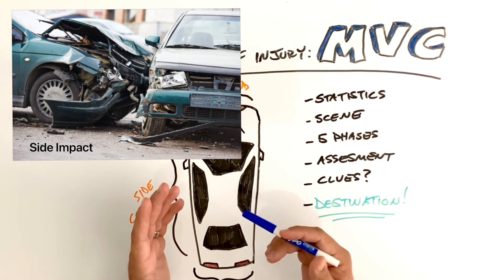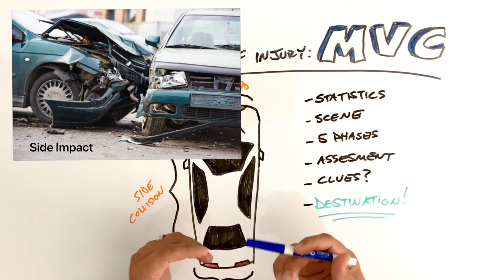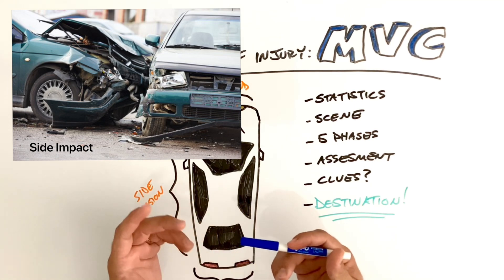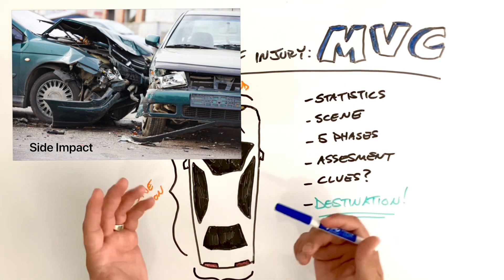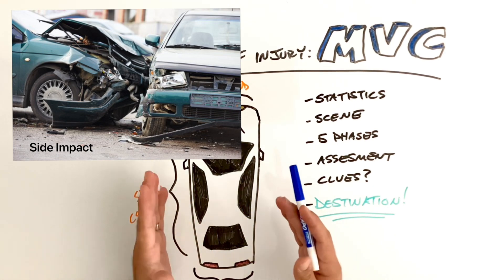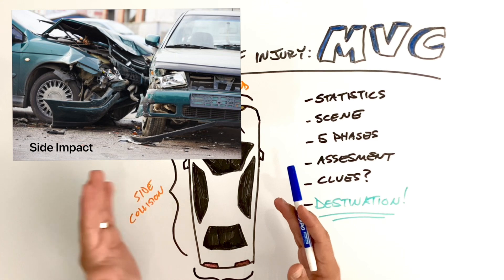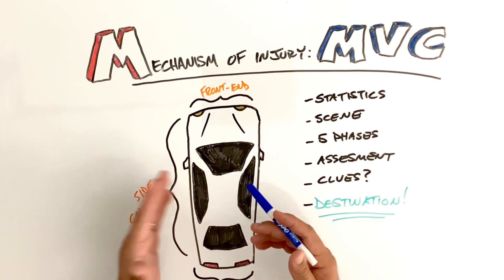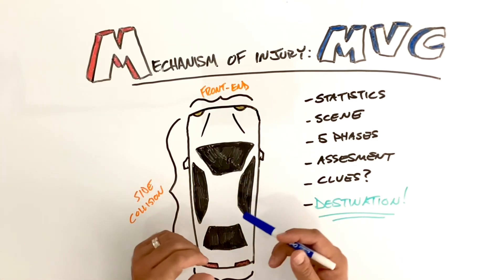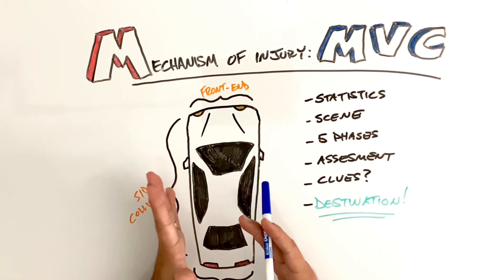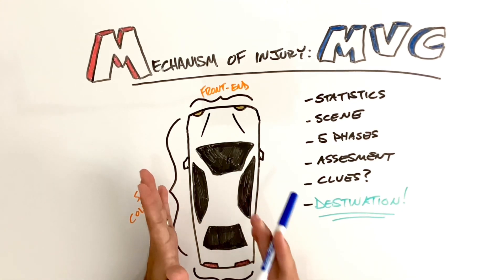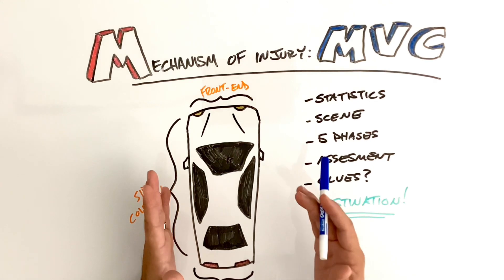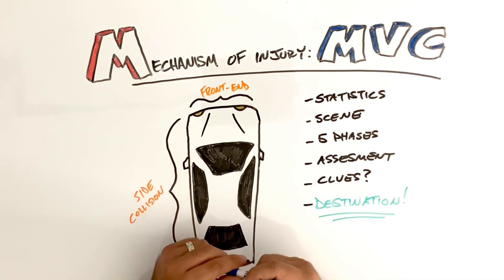Injuries from a side impact include fractured hip, brain injuries, C-spine injuries, contusions, and lacerations — and they're going to be primarily on the side that took the actual impact. So if you're the driver, it's going to be on that patient's left side. The structural clues and the body clues you find on the patient should indicate probably some internal issues going on as well.